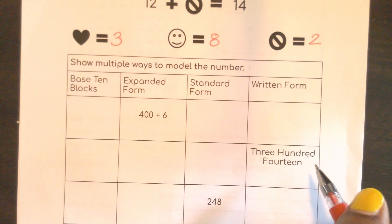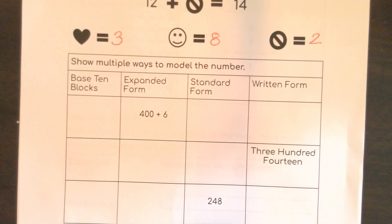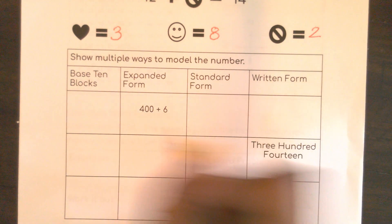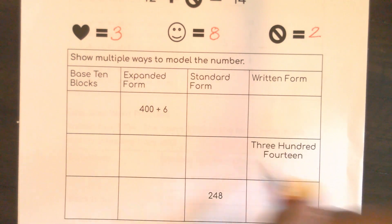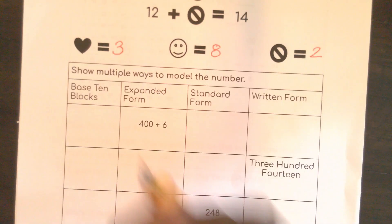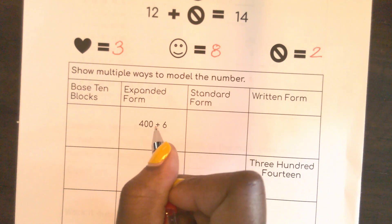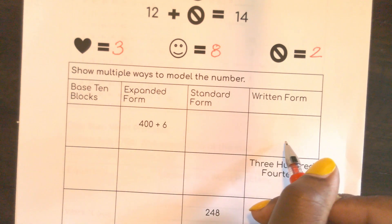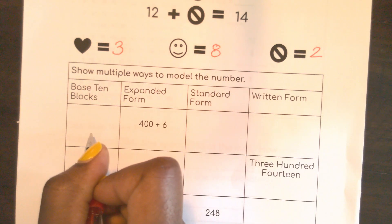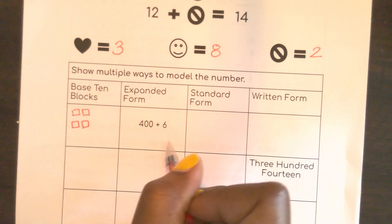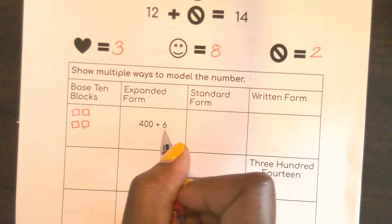This is the fun showing numbers in multiple ways. So in each of these boxes, I'm going to go across with each number. This number I was given in expanded form. I want to change that to base 10 blocks, standard form, and written form. So with the base 10 blocks, I need four hundreds. There are my four. And I don't have any 10s, and I need six ones.